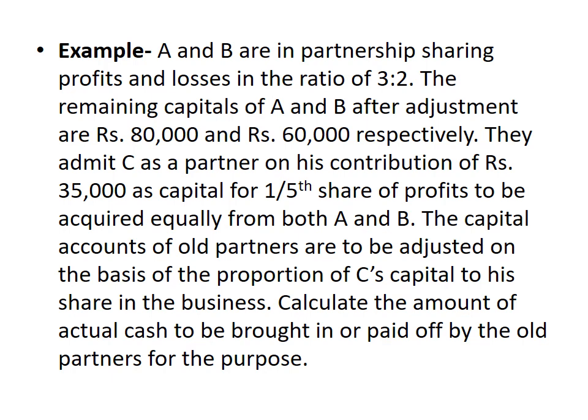A and B are partners sharing profit and loss in the ratio 3:2. The remaining capitals of A and B after adjustment are Rs. 80,000 and Rs. 60,000 respectively. They admit C as a partner on his contribution of Rs. 35,000 as capital for one-fifth share of profits, to be acquired equally from both A and B. The capital accounts of all partners are to be adjusted on the basis of proportion of C's capital to his share in the business. Calculate the amount of actual cash to be brought in or paid off by the old partners.